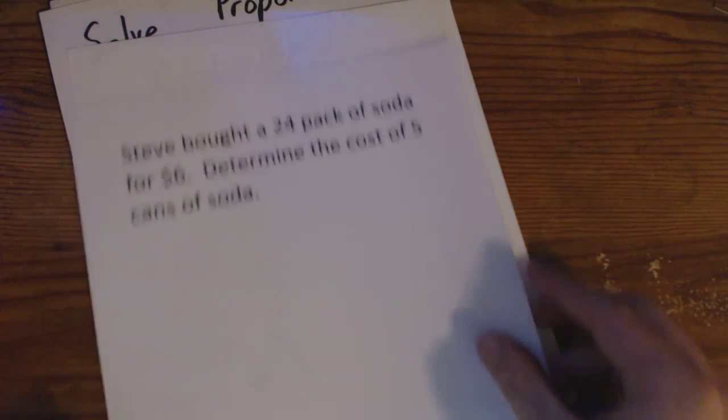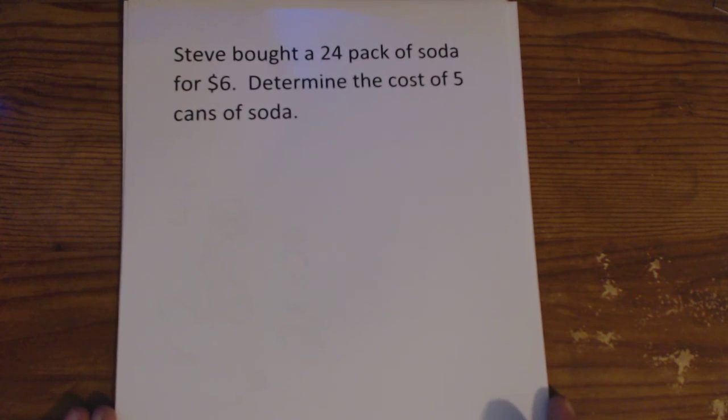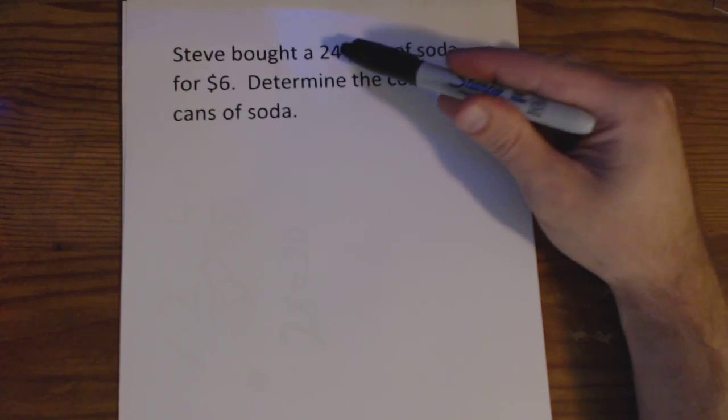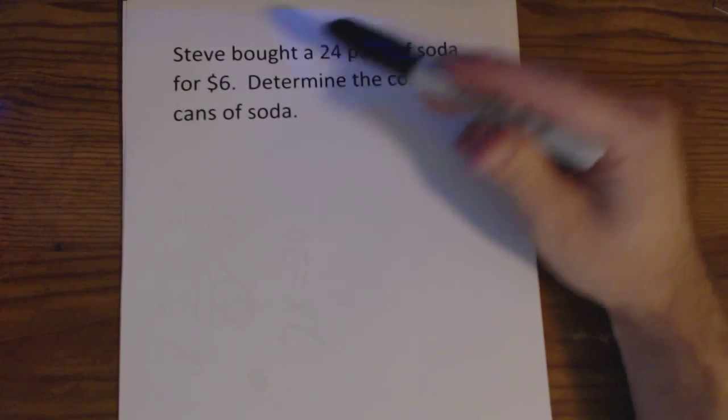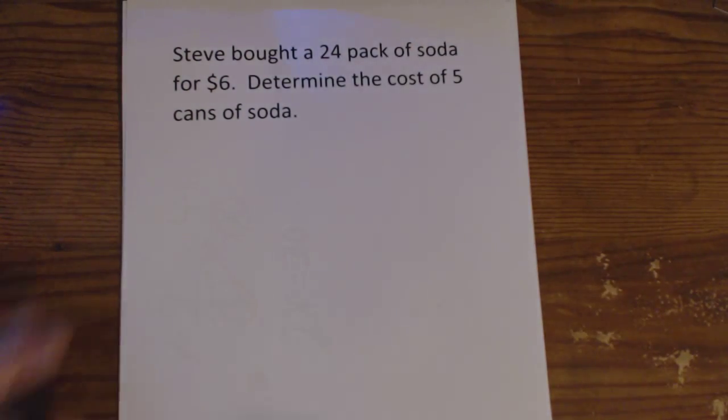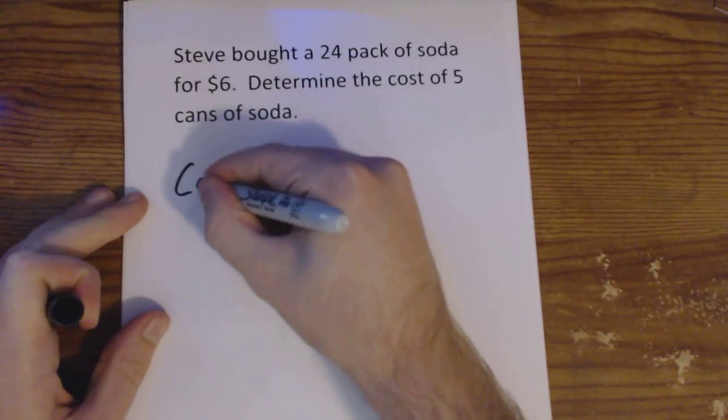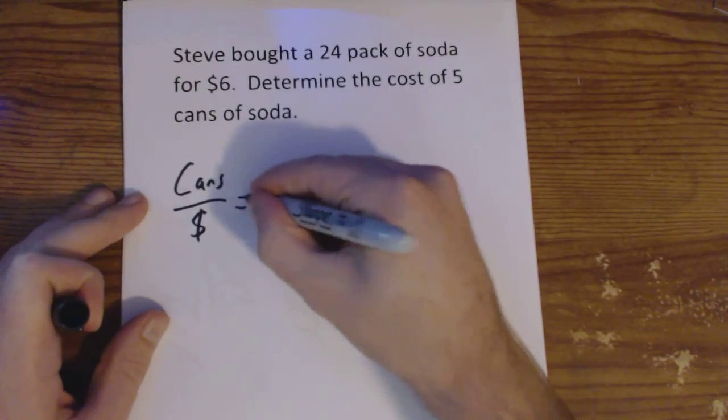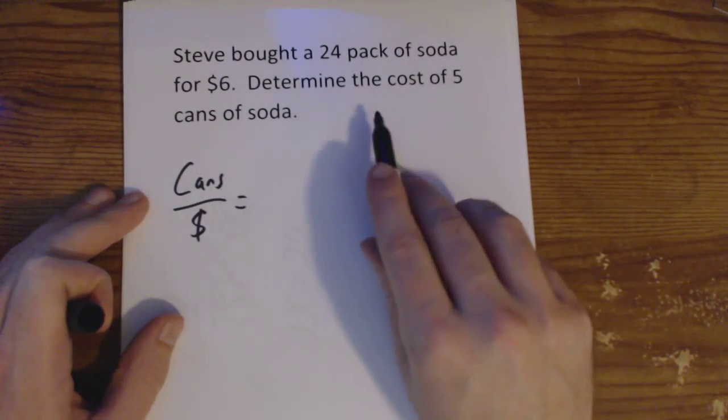So let's work through a little bit more complicated example. Here's a word problem. Steve bought a 24-pack of soda for $6. Determine the cost of five cans of soda. Now in these problems, we're always going to set up fractions dealing with two things. In this case, we have a number of soda cans and cost. So I'm going to put cans and money.